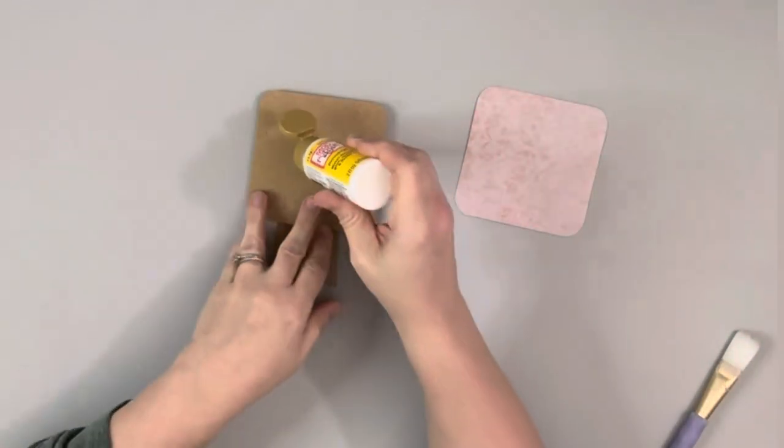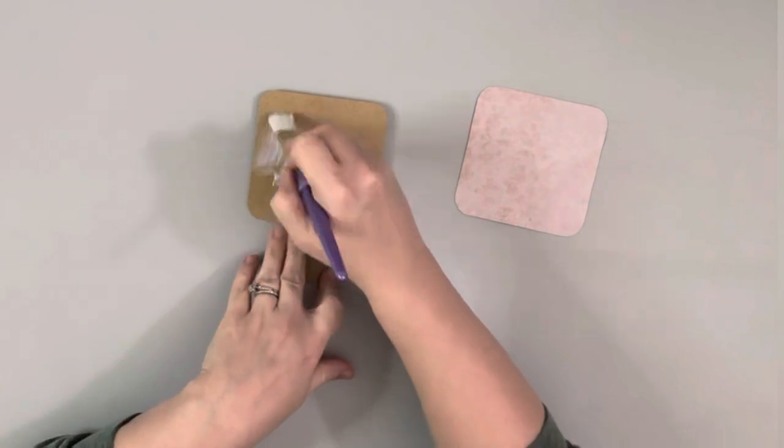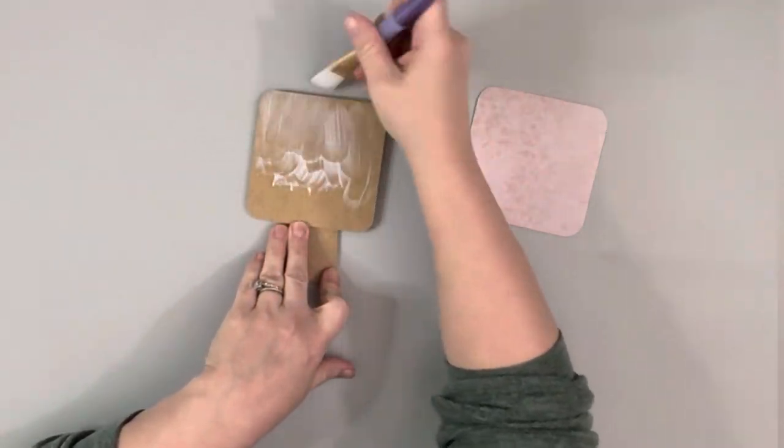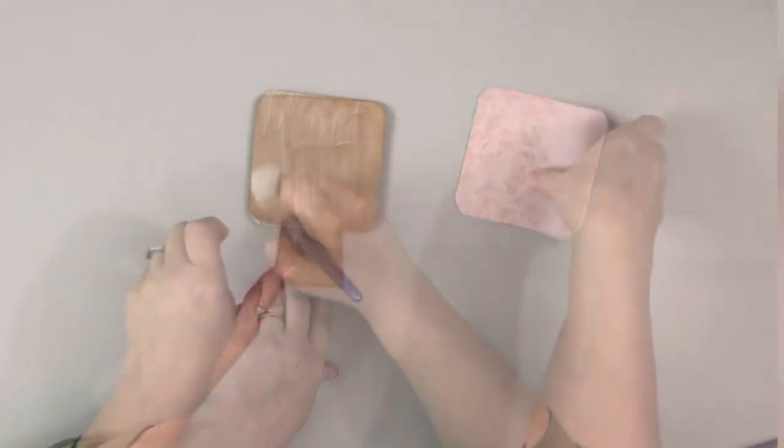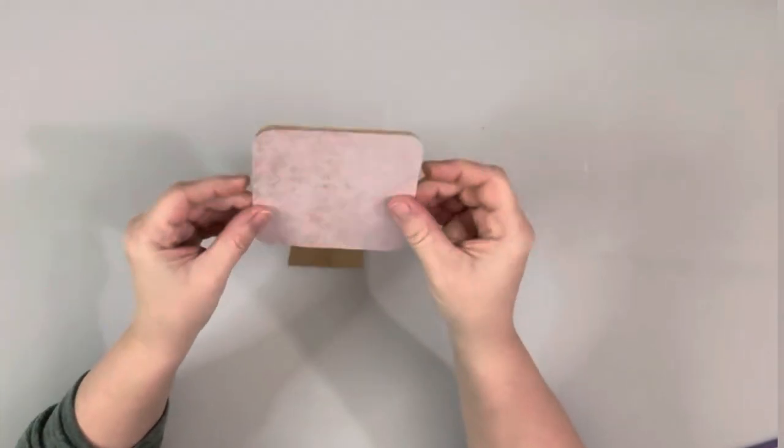I added a generous layer of Mod Podge to the frame insert and then placed down the scrapbook paper, smoothed it out with my hands, and used my heating tool to dry it.